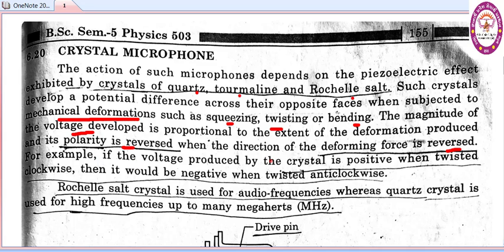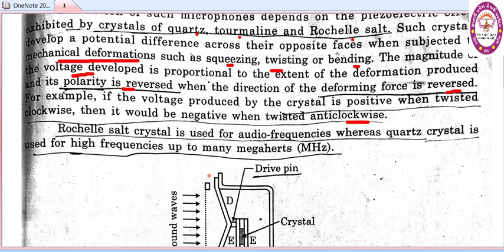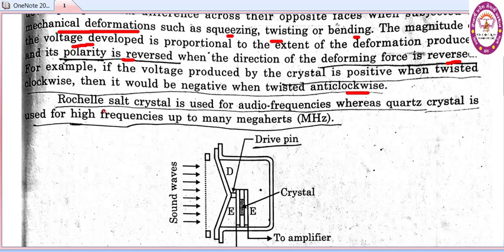For example, if the voltage produced by the crystal is positive when twisted clockwise, then it would be negative when twisted anti-clockwise. The voltage is used for audio frequency, whereas it can go up to higher frequencies of many MHz.